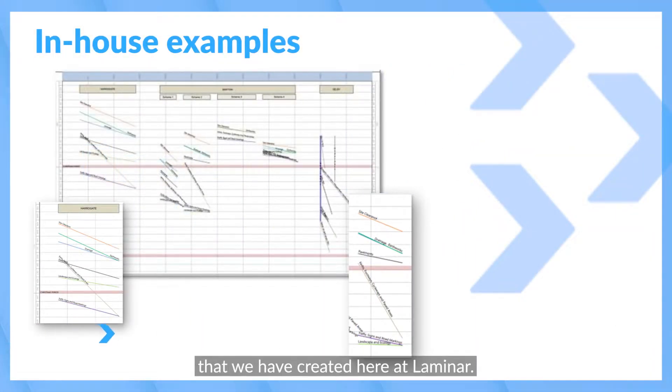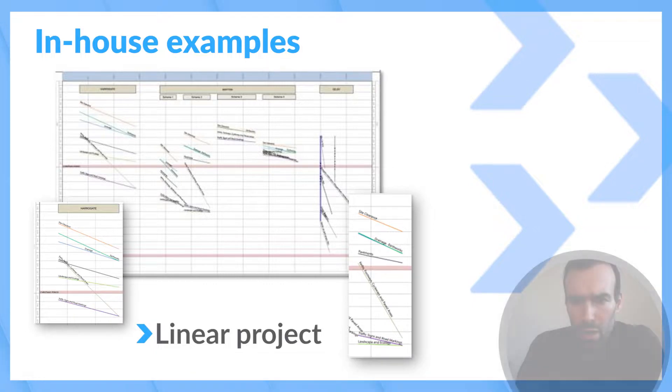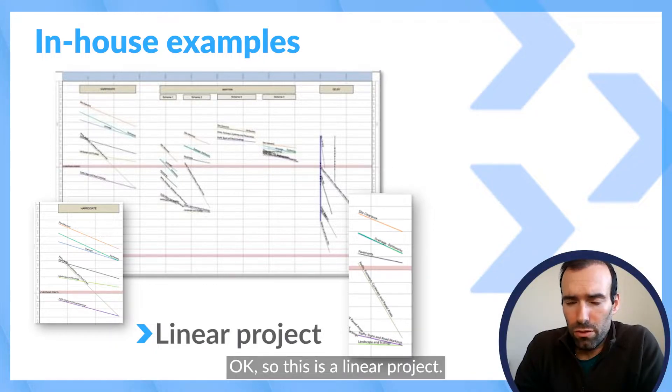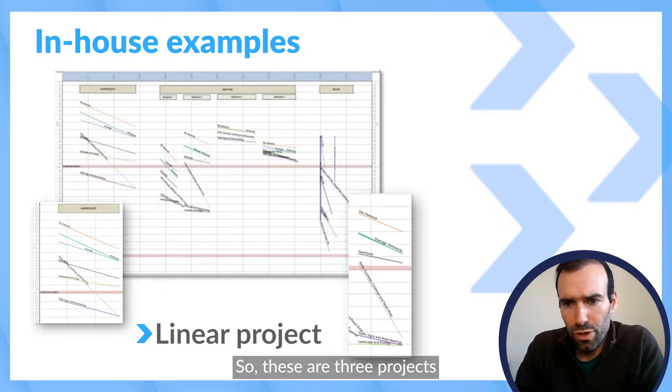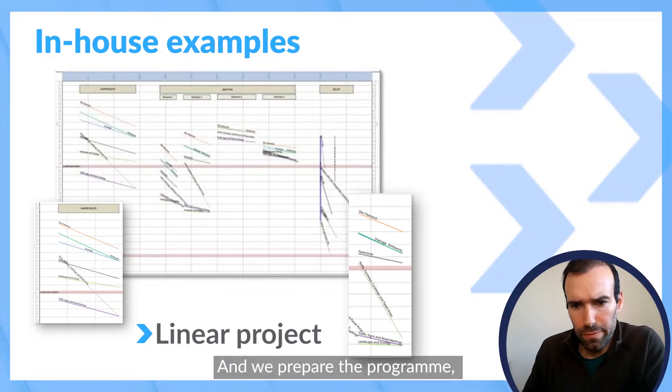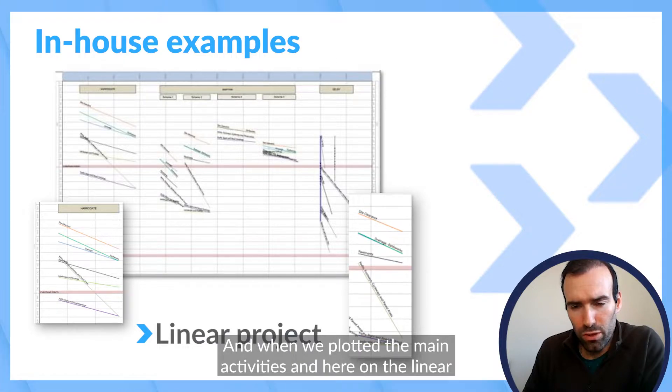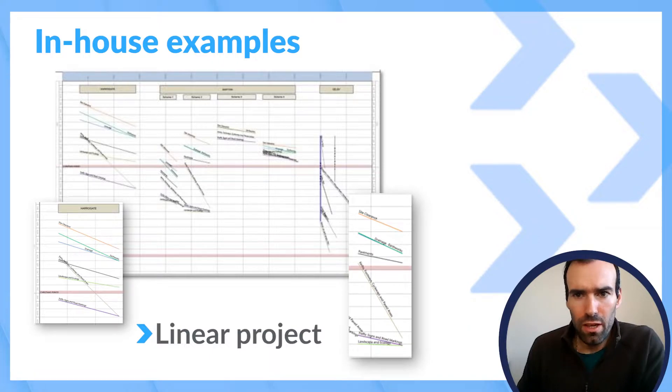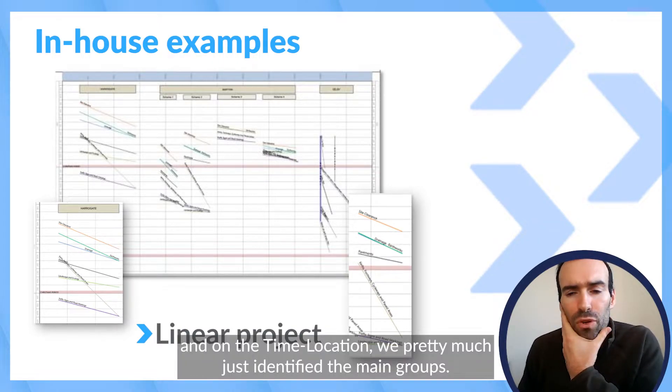Other examples that we have created here in Laminar. Okay, so this is a linear project, actually three projects within the same region, three roads. We prepared the program and then when we plotted the main activities here on the linear, on the time location.